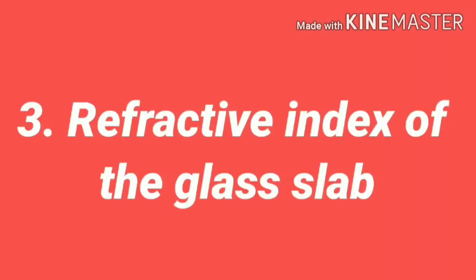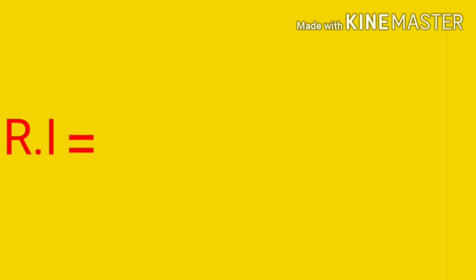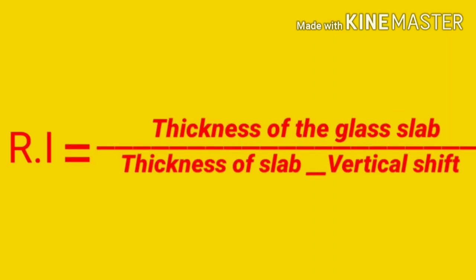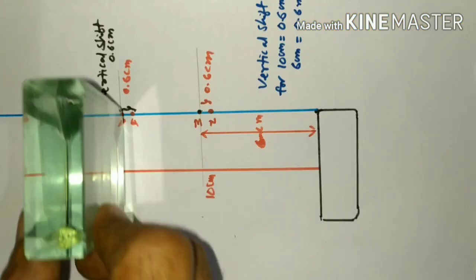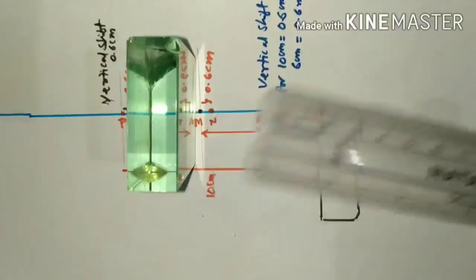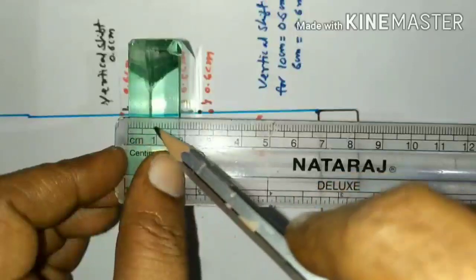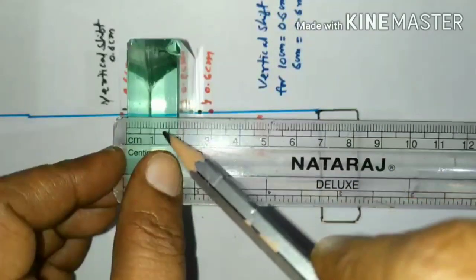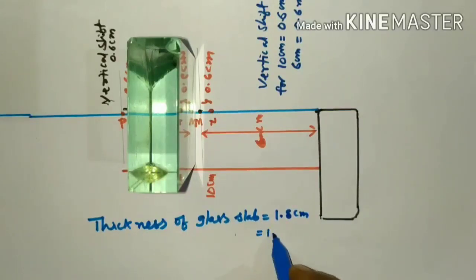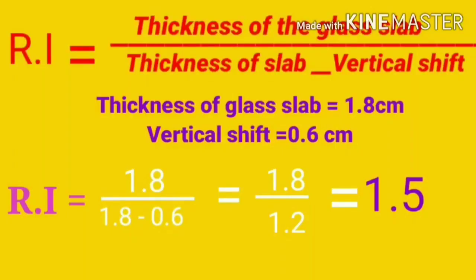Now we will calculate the refractive index of the glass slab. The formula is: refractive index of glass slab equals thickness of the glass slab divided by (thickness of the slab minus vertical shift). The thickness of the glass slab is 1.8 cm and the vertical shift is 0.6 cm. Applying the formula and substituting the values, we get the refractive index as 1.5.